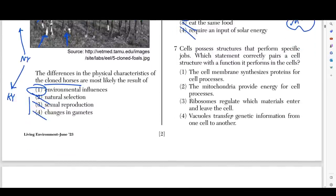Number seven says cells have structures that perform specific jobs — which pairing correctly matches a cell structure with its function? The cell membrane synthesizes proteins — that's wrong; ribosomes synthesize proteins. The mitochondria provides energy for all cell processes — this is the right answer. Remember, mitochondria is the powerhouse of the cell; it produces ATP. Energy equals ATP — throw it back to question number one. Ribosomes make proteins, they don't regulate materials, and vacuoles don't transfer genetic information.